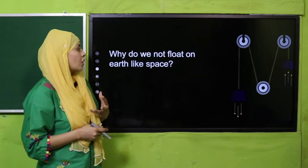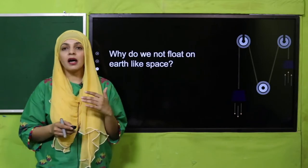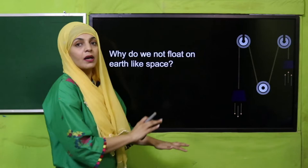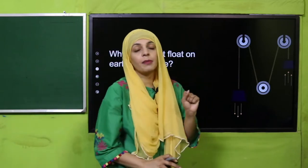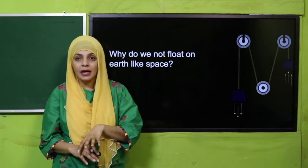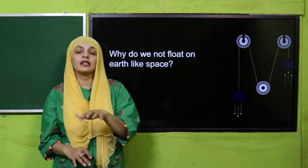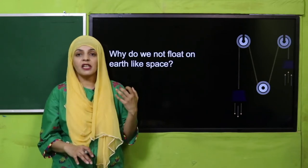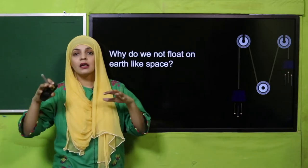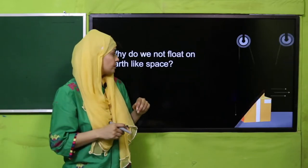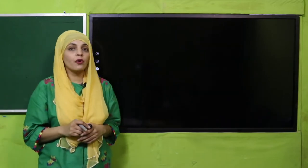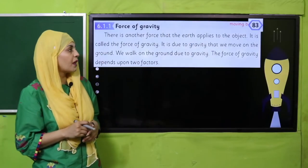Pre-reading question: Why do we not float on earth like in space? Hum earth mein kyun nahin tairte? Because of the force of gravity, hamare qadam jame rehte hain and we can easily walk. But in space, because there is no gravity, people cannot walk — they float there.